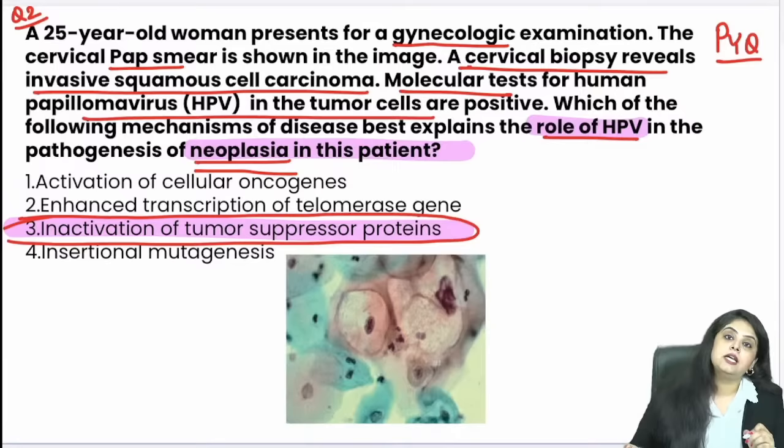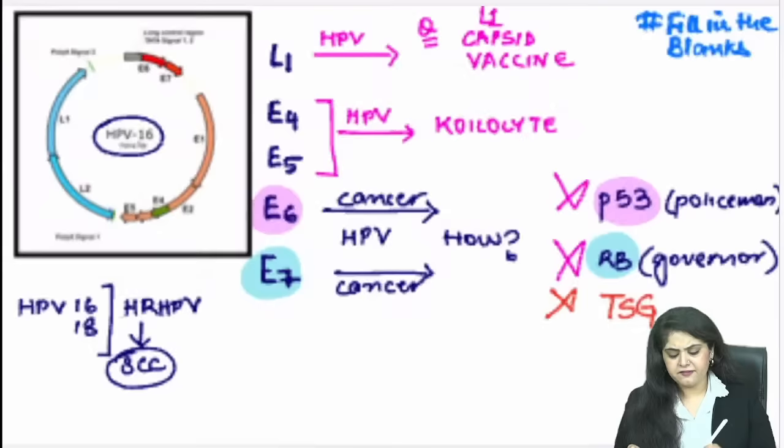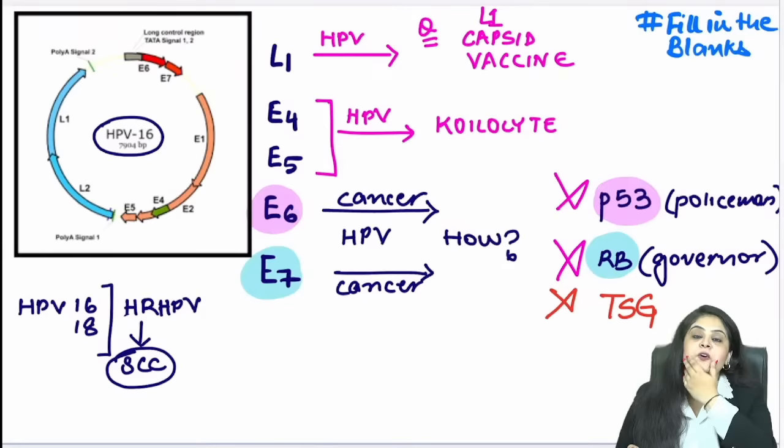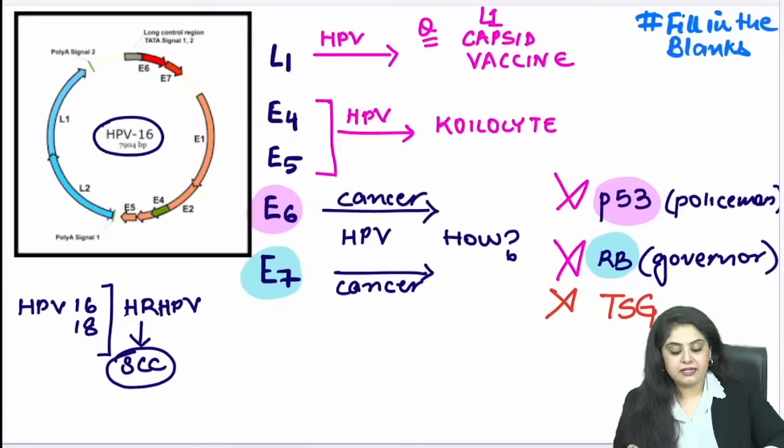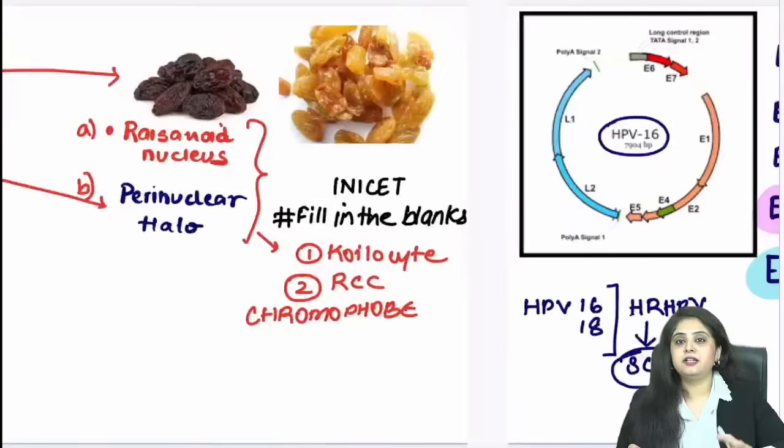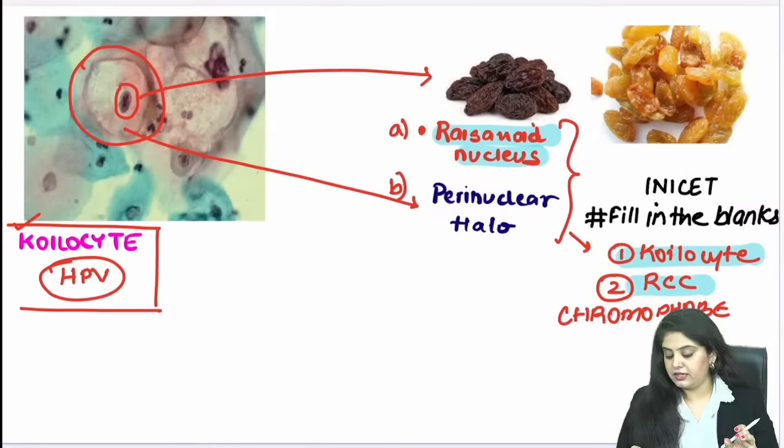The key thing to remember: E6 and E7 inactivate P53 and the RB gene. That is the pathogenesis — inactivation of tumour suppressor genes and proteins resulting in neoplasia. This has always been asked. Whatever way you learnt it, primarily you need to know E6 → inactivates P53, E7 → inactivates RB. Koilocyte and raisinoid nucleus differentials are done. Shall we move to question 3?